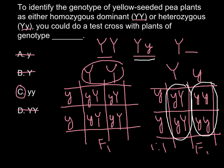Our correct answer is C — the test cross should be performed with a homozygous recessive plant. Thank you for your attention; hopefully you were able to solve this problem correctly. Please subscribe for new videos. Goodbye!